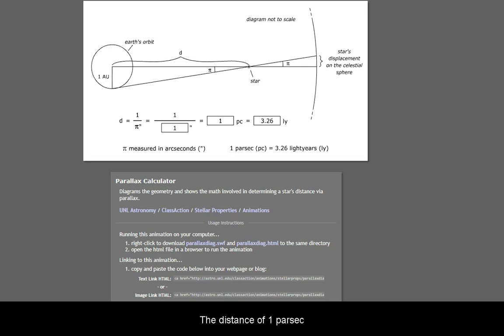The distance of one parsec is defined as the parallax of one arc second observed. This is roughly equivalent to a little over three light years.